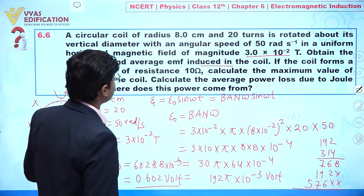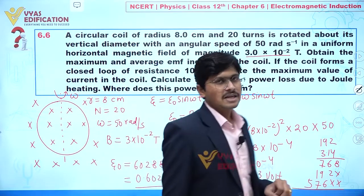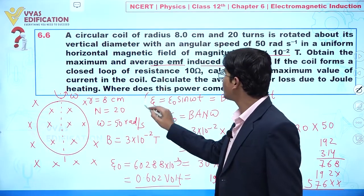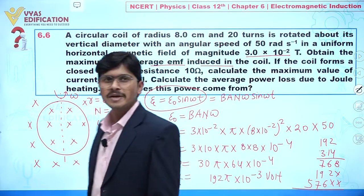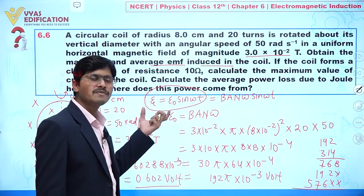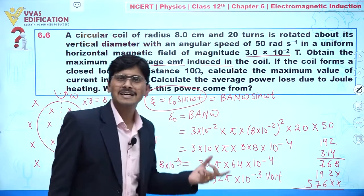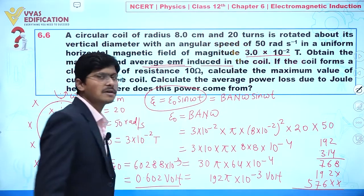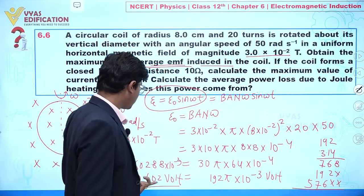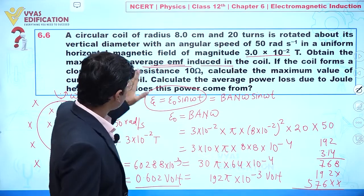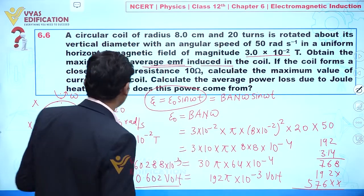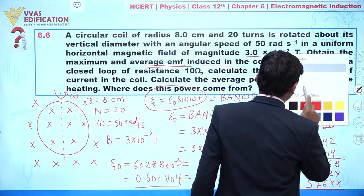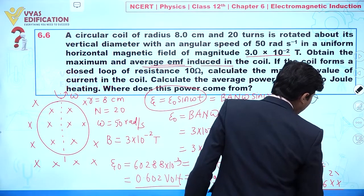The first objective is clear — the maximum EMF is 0.602 volts. For the second objective, we need the average EMF. Since the EMF varies as e = e₀ sin(ωt), which is sinusoidal, the average value of sine over a complete cycle is zero. So the average EMF is 0 volts.